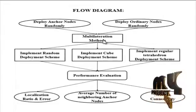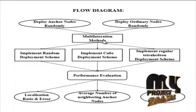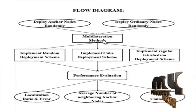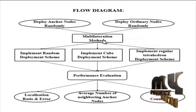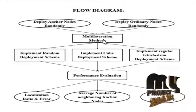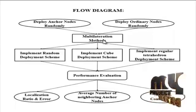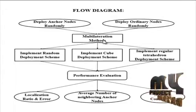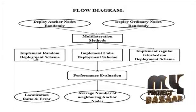The localization errors of the three deployment schemes increase with the increase in the number of sensor nodes. This is because the RSSI method uses the relationship between transmitted power and received power of wireless signals to express the distance between two communicating nodes. The longer the distance between two communication nodes, the larger the localization error caused by the RSSI-based localization technique.